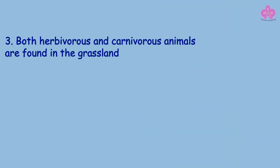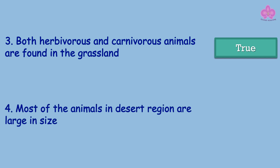Question 11: Both herbivorous and carnivorous animals are found in the grassland. Answer: True. Question 12: Most of the animals in desert regions are large in size. Answer: False.